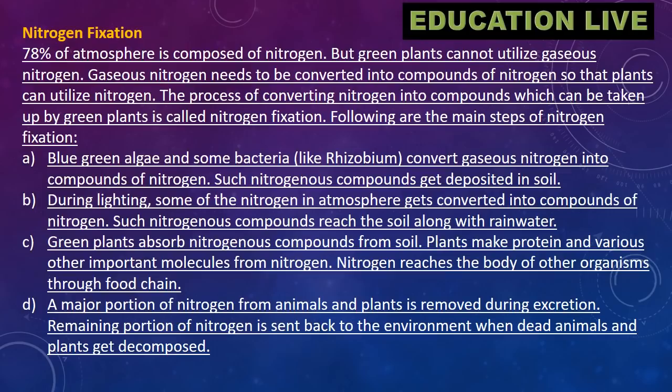Steps of nitrogen fixation: (a) Blue-green algae and some bacteria like rhizobium convert gaseous nitrogen into compounds of nitrogen. Such nitrogenous compounds get deposited in soil. (b) During lightning, some of the nitrogen in the atmosphere gets converted into compounds of nitrogen. Such nitrogenous compounds reach the soil along with rainwater.